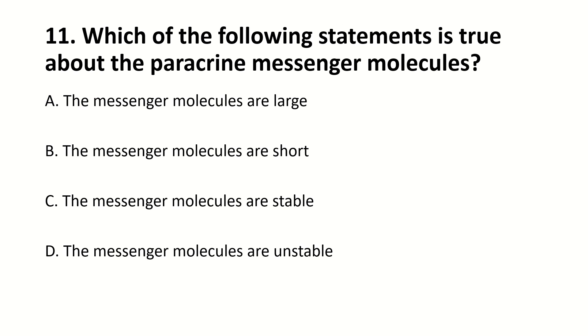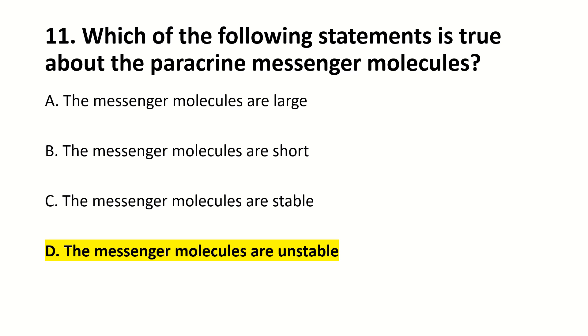Which of the following statements is true about paracrine messenger molecules? Right answer is D — the messenger molecules are unstable.